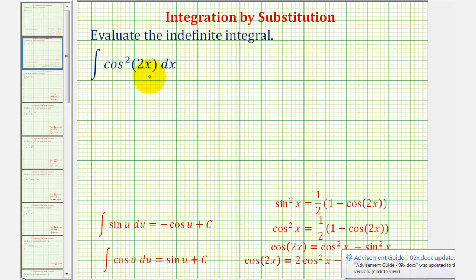So we might be thinking that we should perform a u substitution, where if we let u equal cosine 2x, we could write this as u squared.